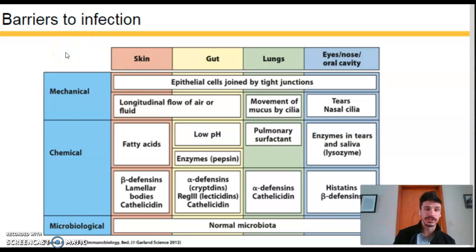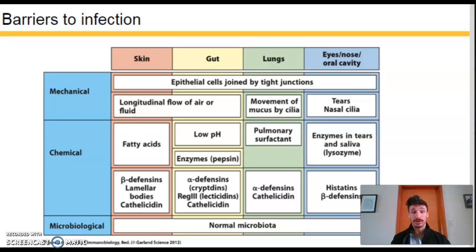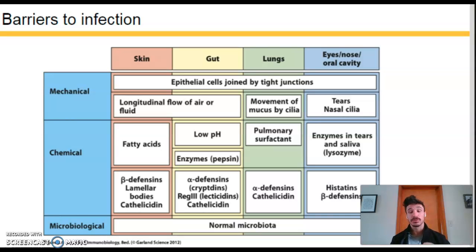This chart covers some barriers to infection — the non-cellular components of the innate immune system. These include mechanical, chemical, and microbiological barriers. The microbiological category is notable because we are colonized by enormous numbers of bacterial species — we are actually more bacteria than human cells — and these bacteria play a huge role in our health and in keeping other pathogens, especially fungal infections, at bay.